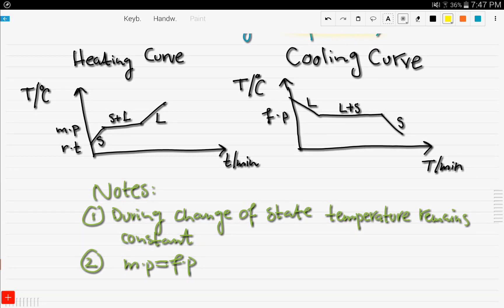Now let's look at the heating curve and cooling curve. When you have any graph, remember to correctly label it — here we have temperature in degrees Celsius and time in minutes. At room temperature the substance is a solid. At the melting point, which is the temperature at which a solid changes to a liquid, the state is both solid and liquid. During a change of state, the temperature remains constant.